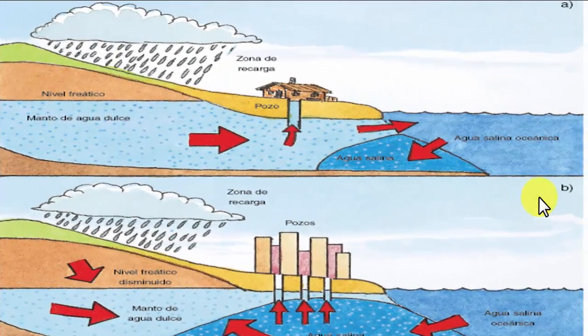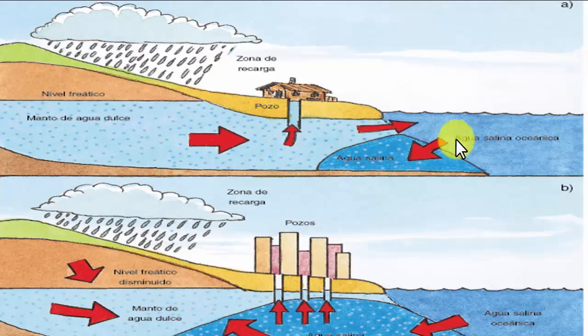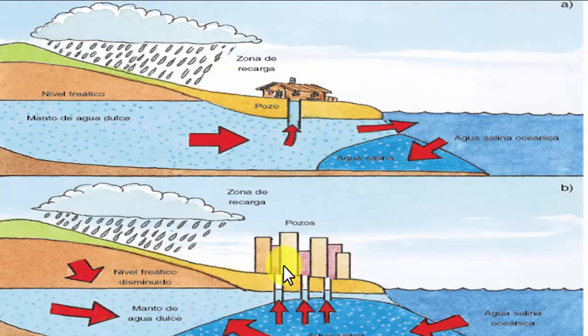El esquema muestra toda la dinámica que ocurre en los acuíferos como parte del ciclo hidrológico: el agua que cae va en parte por escorrentía y el resto alimenta el acuífero. También se aprecia cómo las aguas oceánicas entran en el acuífero costero, con una zona de transición entre agua dulce y agua salada que será estudiada en el tema correspondiente.